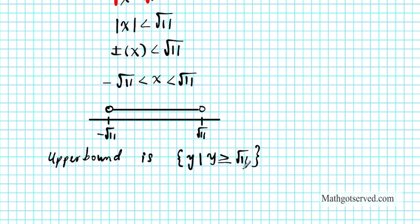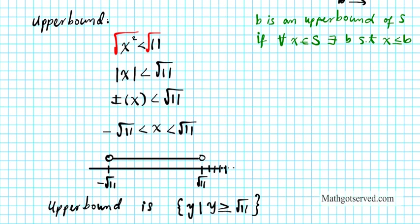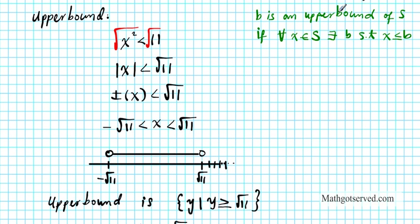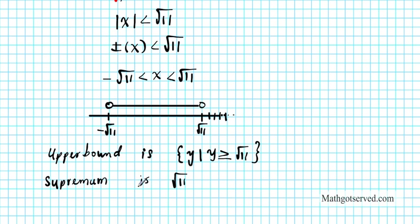Out of this collection of upper bounds, what is the supremum? The supremum is the least of all upper bounds, also known as the least upper bound. So the least upper bound of S is √11. Therefore the supremum is √11.